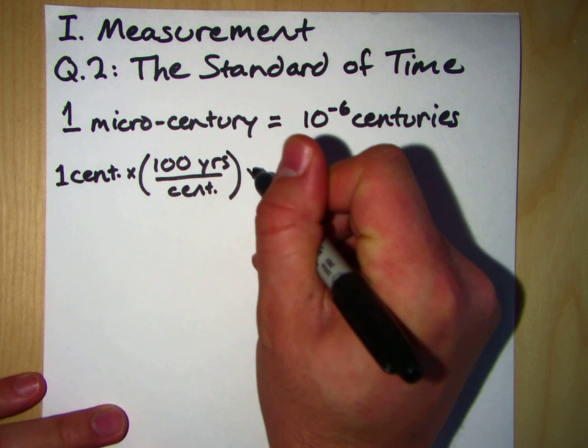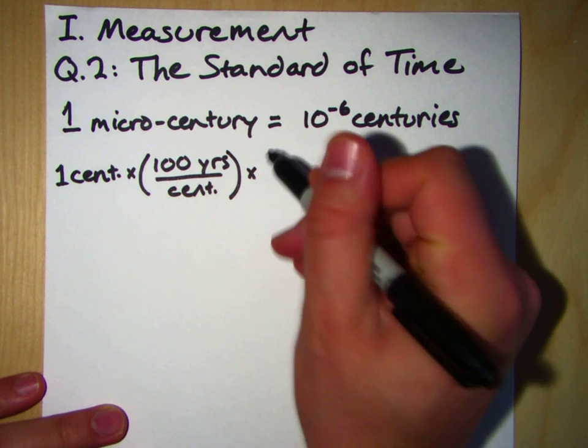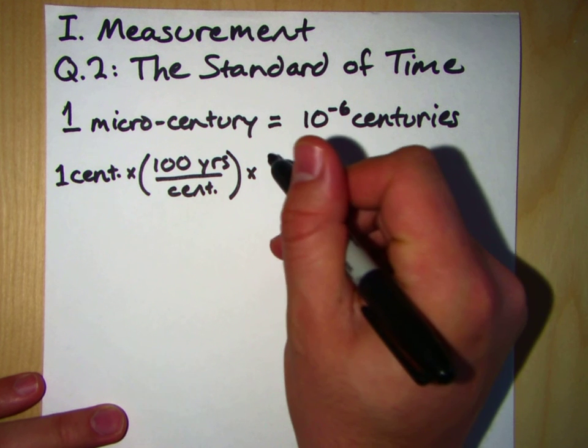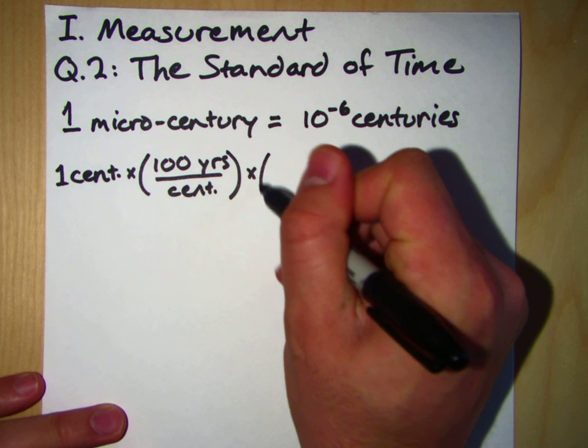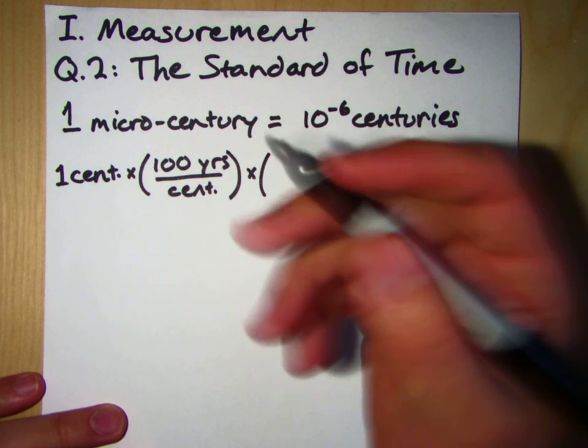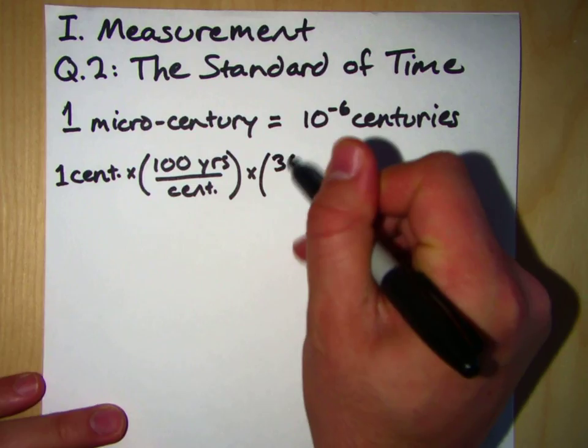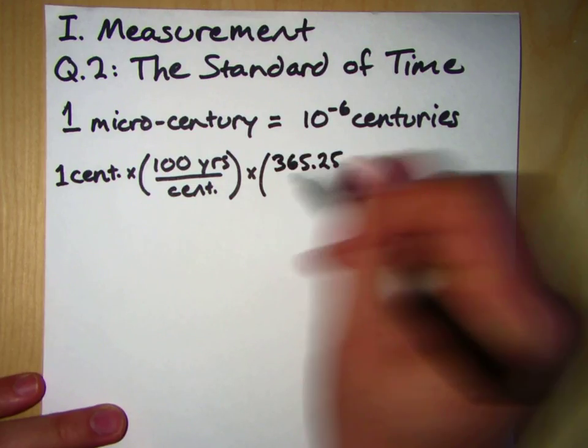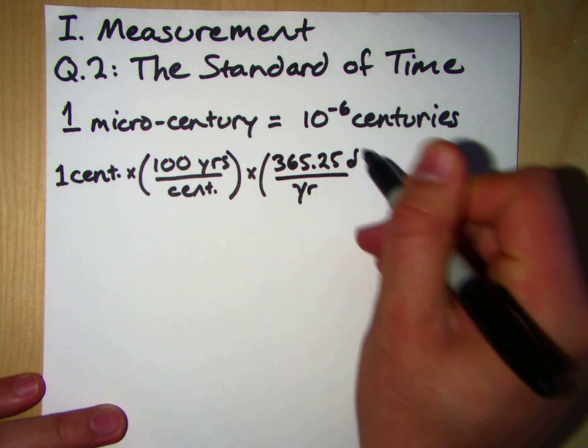How many days are in a year? Well, depending on the year, there's either 365 days or 366 days. But over the course of 100 years, because that leap year is every fourth year, that means on average, each year is 365.25 days per year.